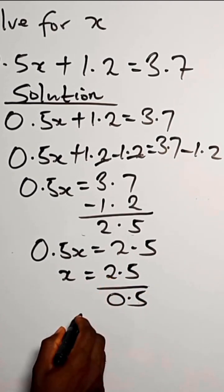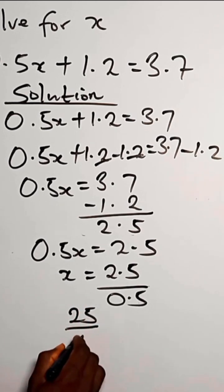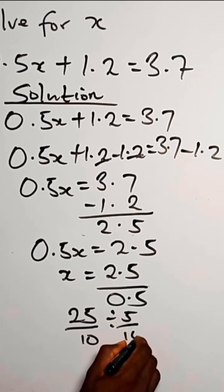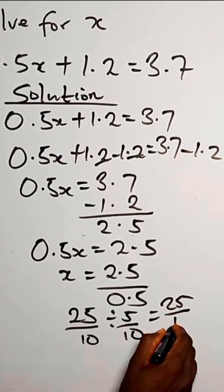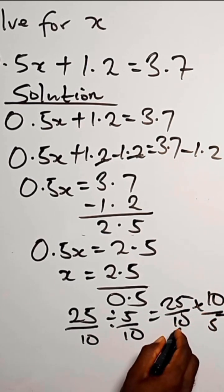So we can break this down as 25 over 10 divided by 5 over 10. Or we have it as 25 over 10 times 10 over 5.